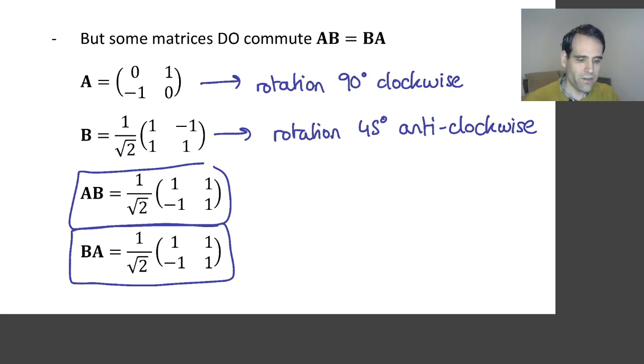For now, remember that some linear transformations don't commute. And it means that the matrix associated with them is not the same if you multiply A times B than B times A. And some other transformations do commute. And when that happens, A times B is equal to B times A.